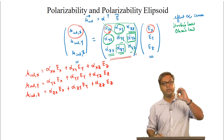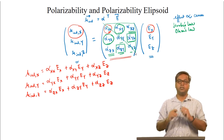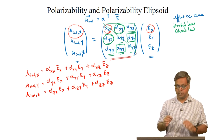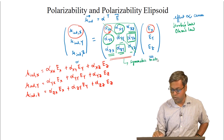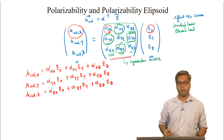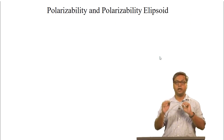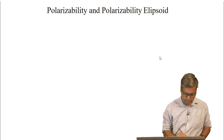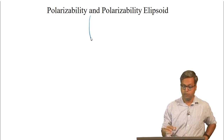This is with respect to the xyz coordinate system. The alpha matrix is a symmetric matrix, and symmetric matrices can be diagonalized. Let us write the matrix of alpha again to explore what that means.